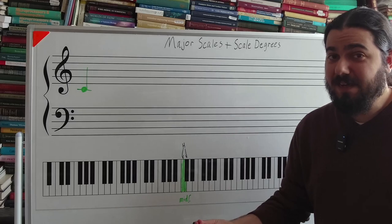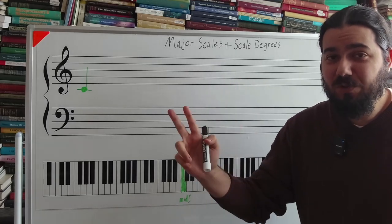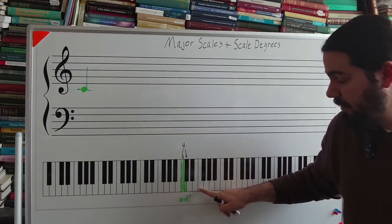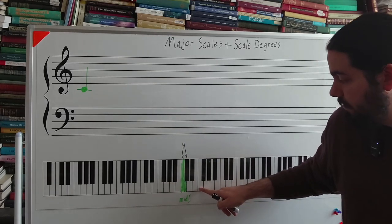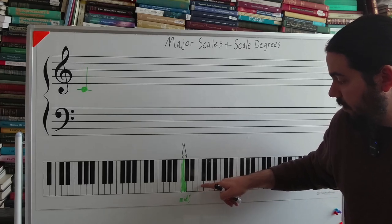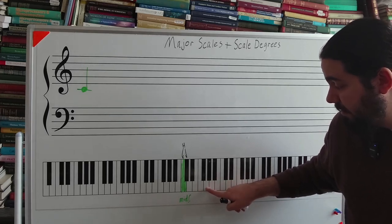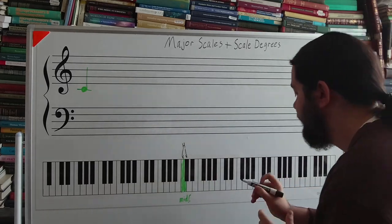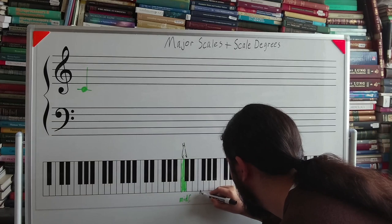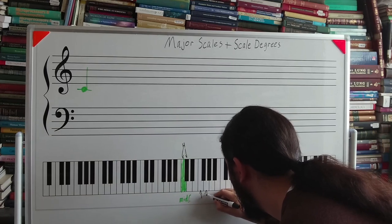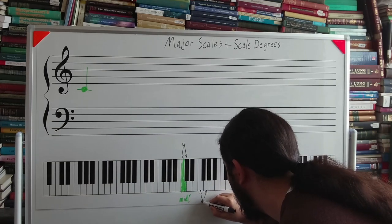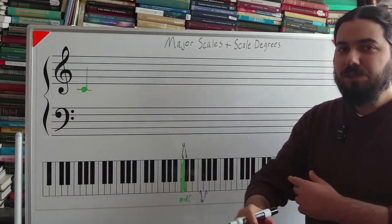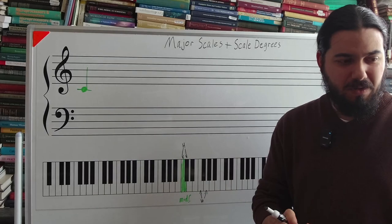A whole step consists of two half steps. So the distance from this F, for example, to this G, that is a whole step. And we'll use a W to represent whole steps.